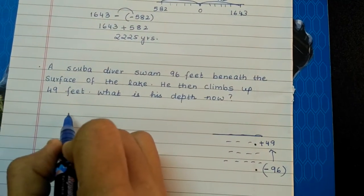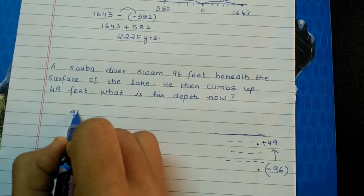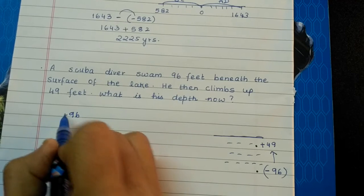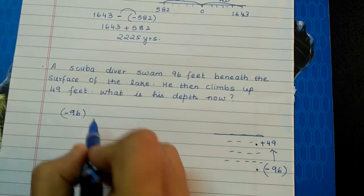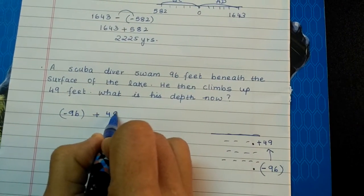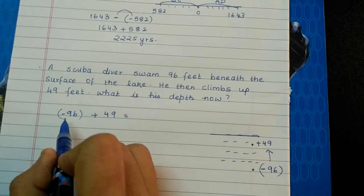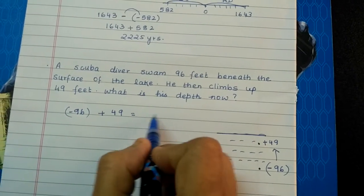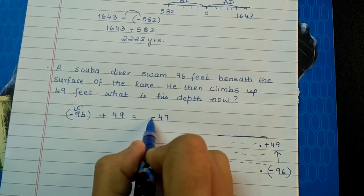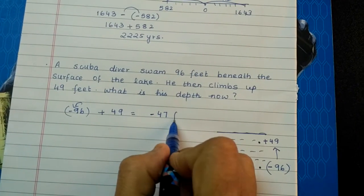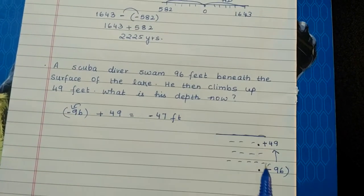Let us assume first 96 feet below, so minus 96, and then plus 49 because he is climbing. Plus and minus, what should we do? We should subtract and put the sign of the greater number. So now he is at minus 47 feet.